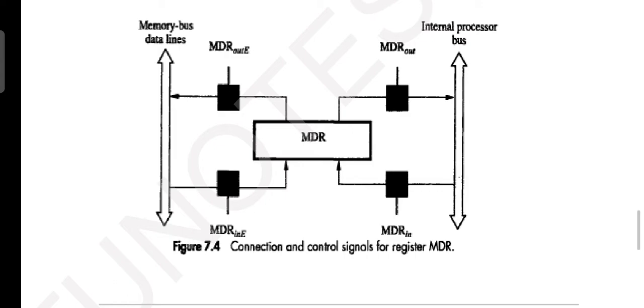Apart from the internal processor bus, it is also communicating to the address bus. Memory bus data line it is called, or memory line and memory bus data line, or address line you can say.